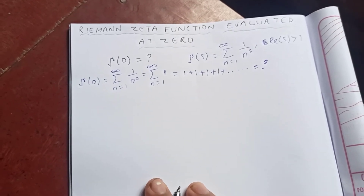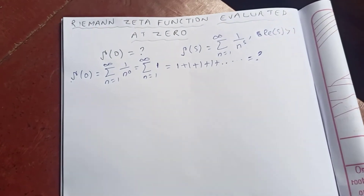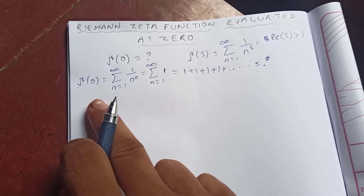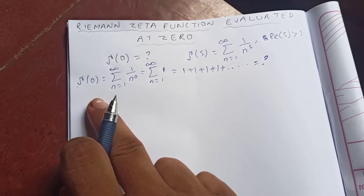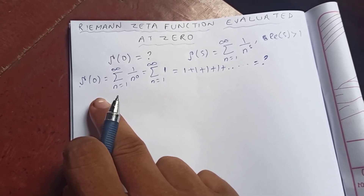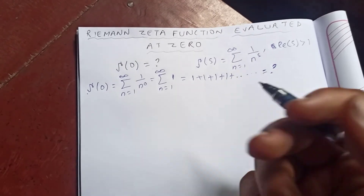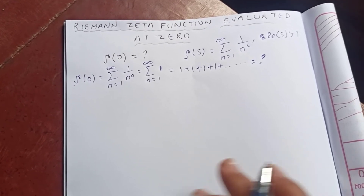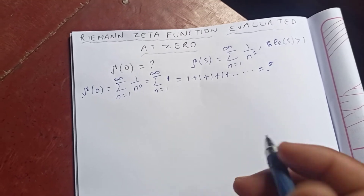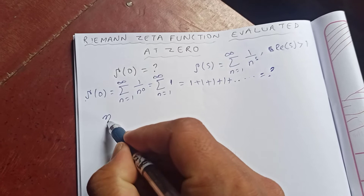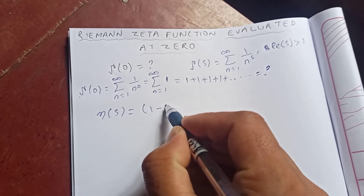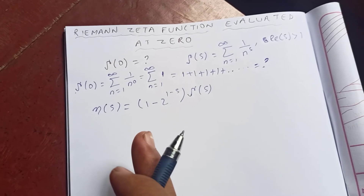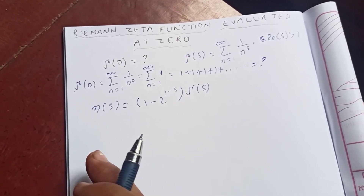In order to get zeta of zero, you can use the functional equation, and also the residue theorem, but I'm going to approach it another way. Let's see this relation: the eta function is the same as one minus two to the one minus s, times zeta of s. This is the relation between the zeta and eta function.